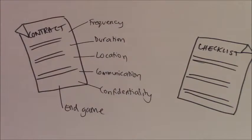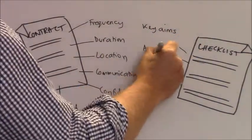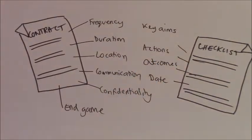And the second is a checklist. It gives you a very simple record of what your key aims are, what your actions are, what your outcomes are and when this all happened.